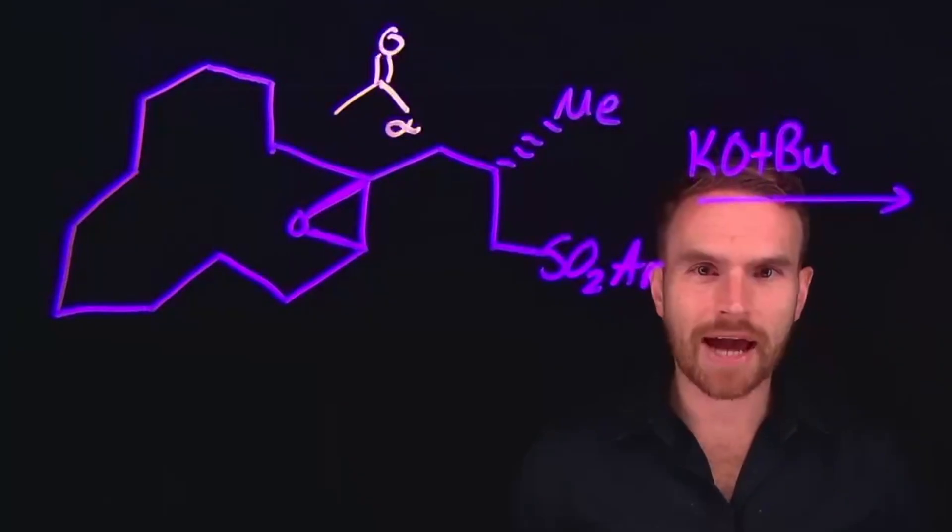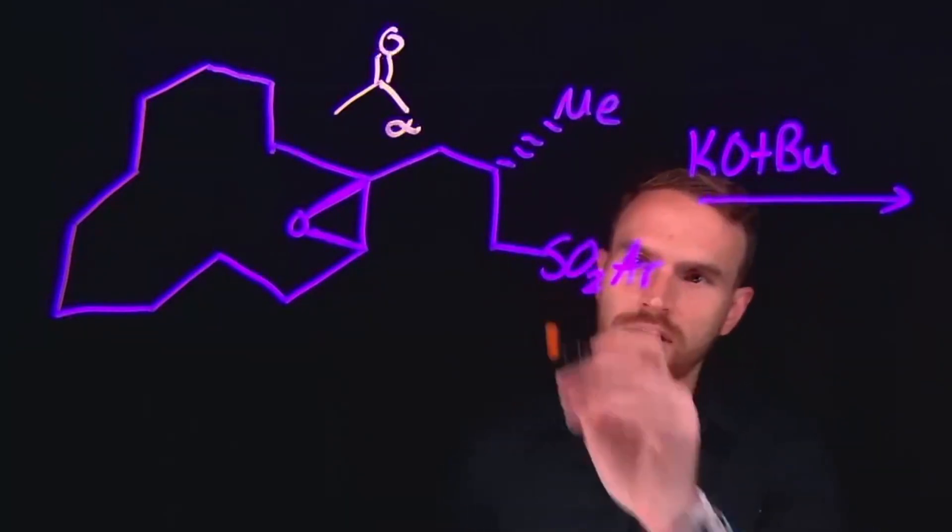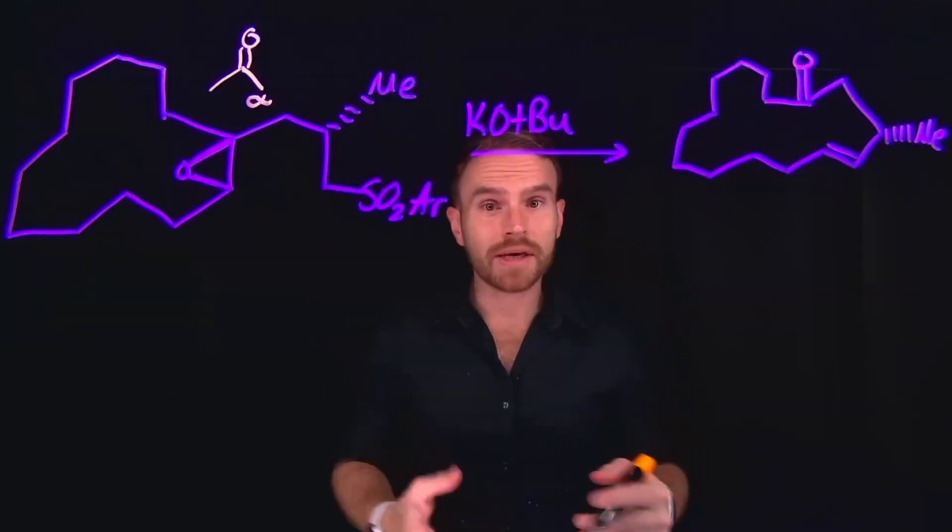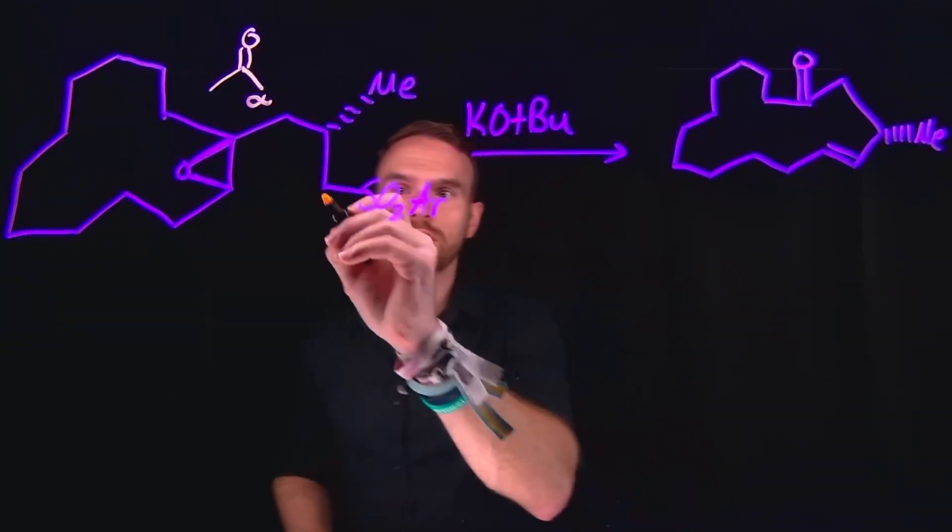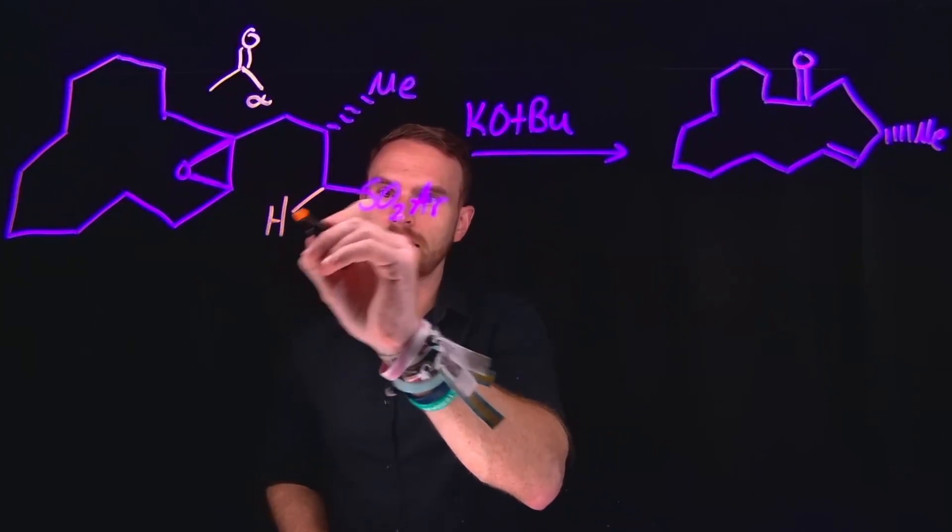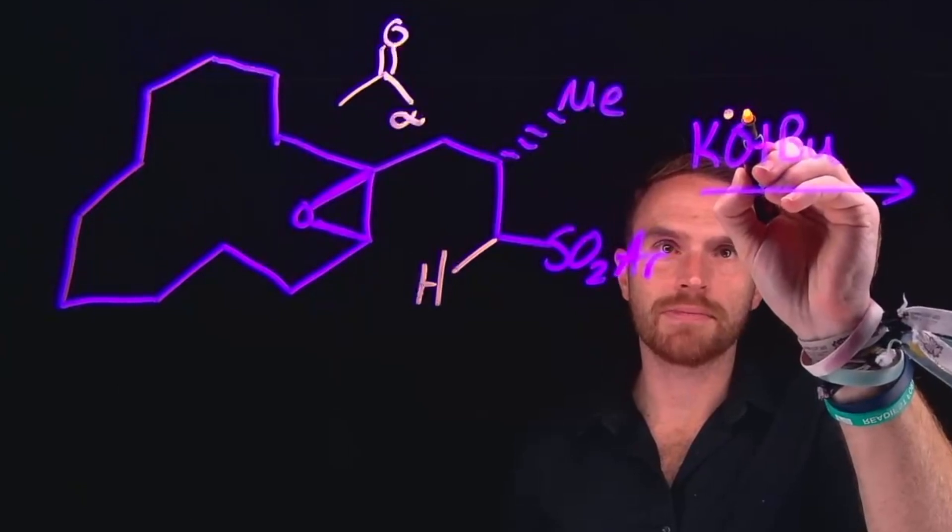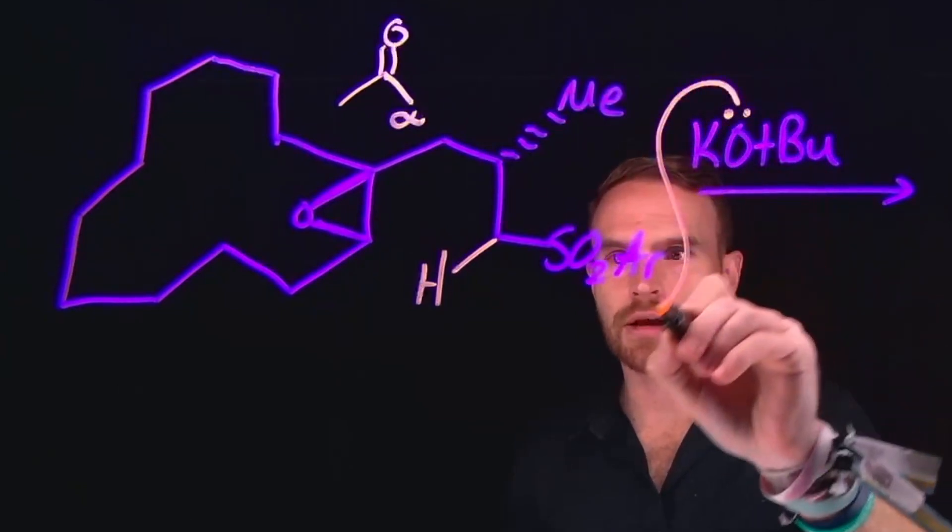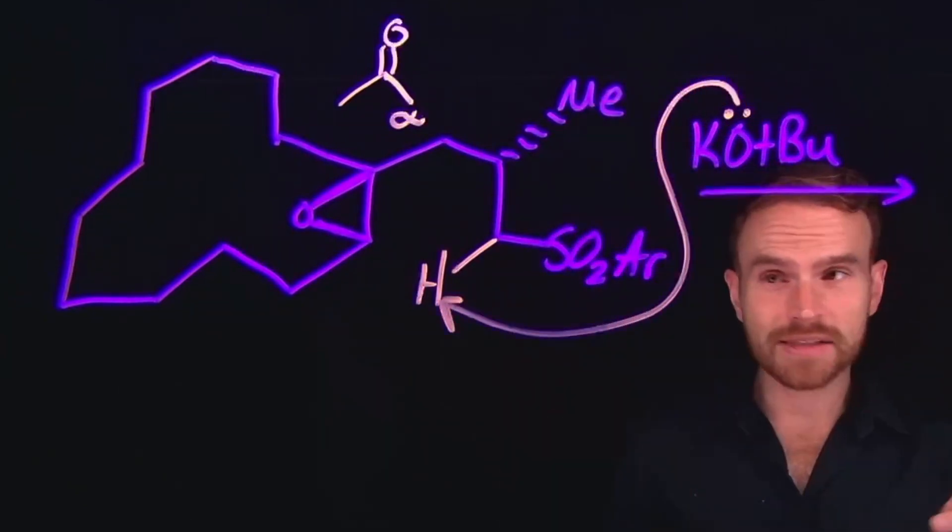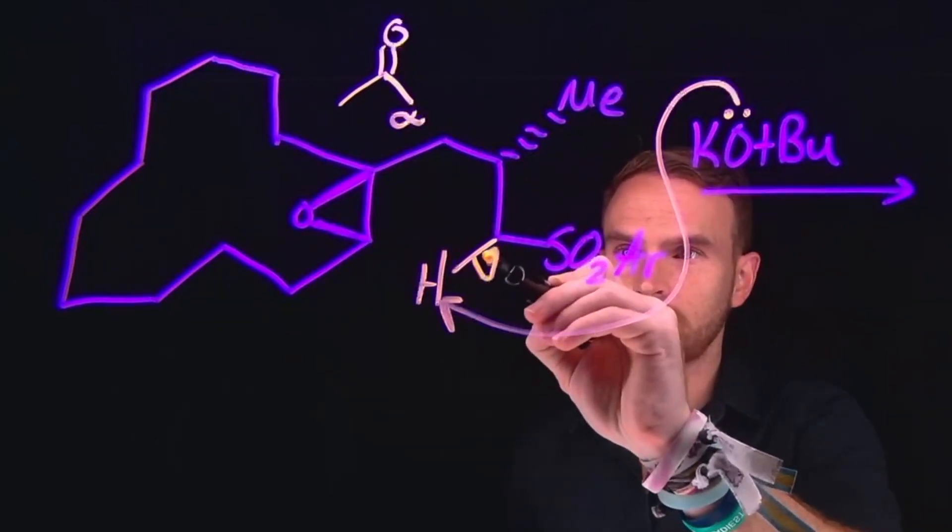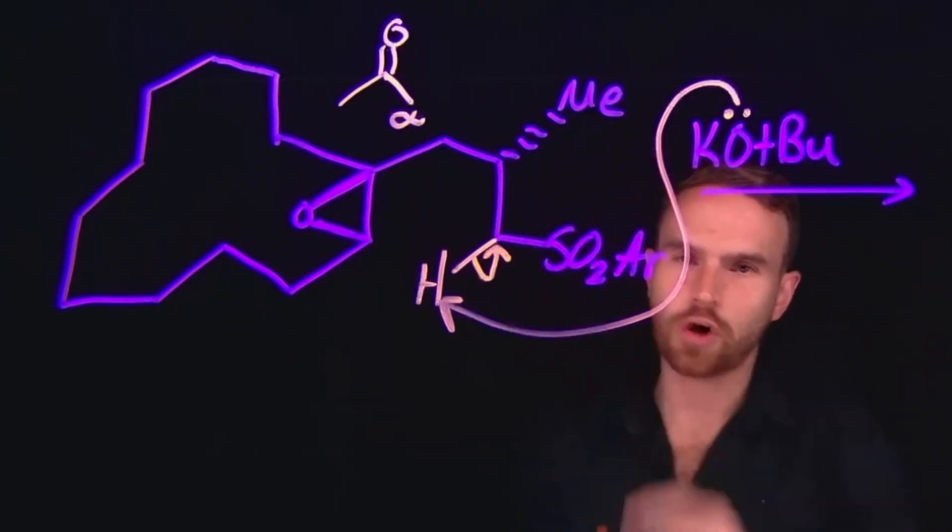The same type of reaction and the same type of mechanism can be drawn for alpha carbons that are adjacent to sulfonyl groups. Because these are also very electron-withdrawing groups which are going to acidify the alpha carbon hydrogen. So therefore, the first step in this mechanism is actually the deprotonation of that alpha carbon hydrogen. And this is effectively going to generate a lone pair anion at this carbon position.